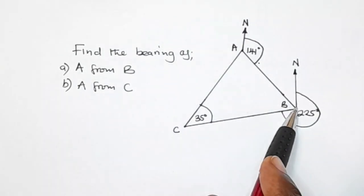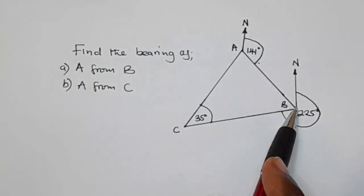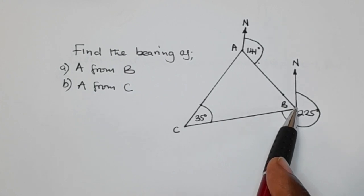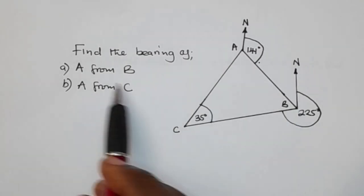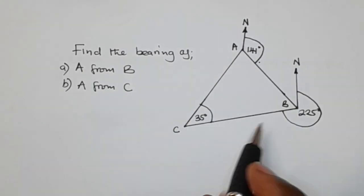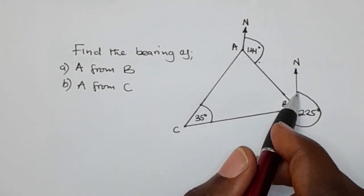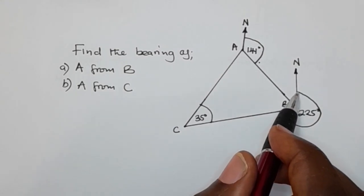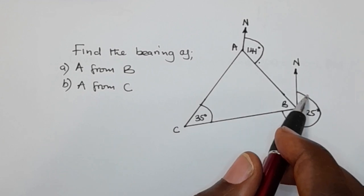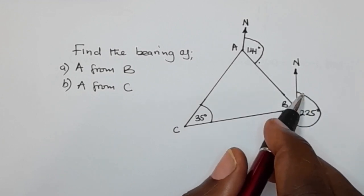And where you are standing — the point at where you are standing — you need to draw a north. So since we already have a north here at B, we won't draw it. Bearing is measured clockwise from the north.